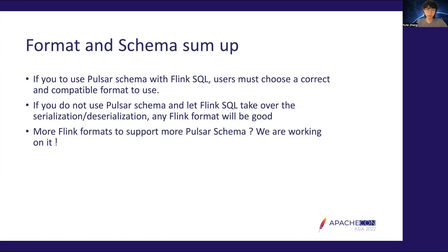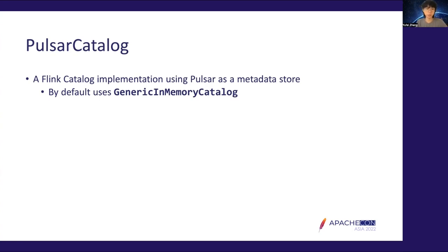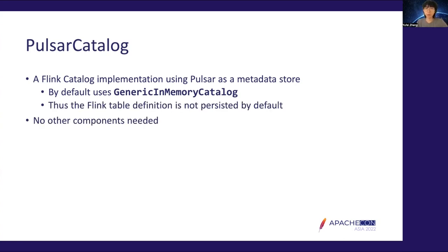We've covered a lot about the Pulsar SQL Connector, and now we'll talk about another important concept: the Pulsar Catalog. It's a metadata storage for Flink SQL used to store table definitions. By default, Flink SQL uses a generic in-memory catalog — when you create a table, UDF, or view, everything persists only in memory and is lost if you restart Flink. That's why we use Pulsar as the metadata storage to persist those table definitions. We only need Flink and Pulsar — no other components. However, as of today, the Pulsar Catalog does not support views or UDFs; it only supports persistent table definitions.